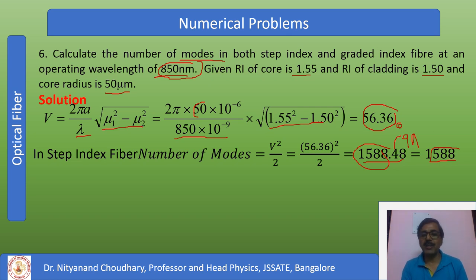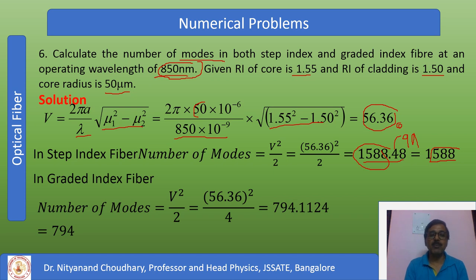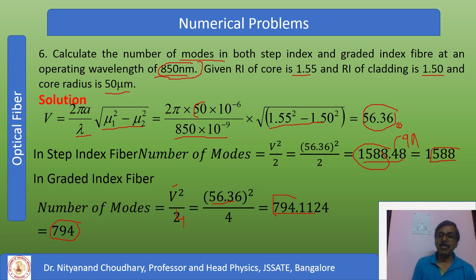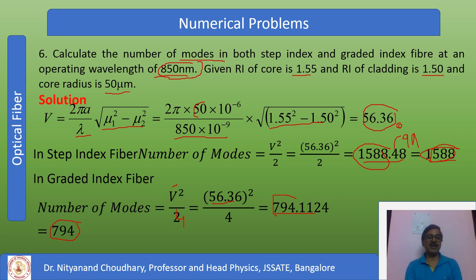For the graded-index fiber, the number of modes N = V²/4. Substituting V = 56.36, we get approximately 794 modes. So for the same refractive indices, the step-index fiber supports far more modes than the graded-index fiber. This is also an important theoretical concept to remember.